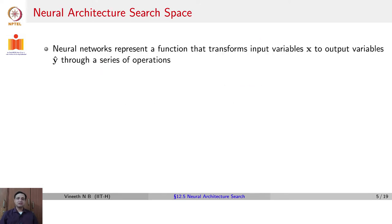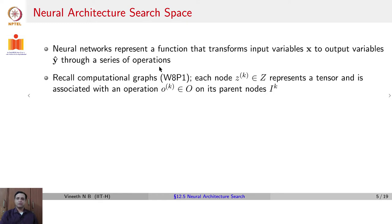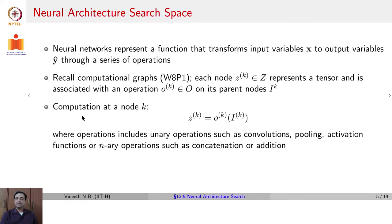The search space of NAS methods is extremely important. How is the search space defined? One can view neural networks as a function that transforms input variables to output variables through a series of operations. If you look at neural networks as computational graphs, each neural network node represents a tensor and is associated with an operation on its parent nodes. So the computation at a node K is given by Z superscript K equals the operation at K of its parent nodes I_K.